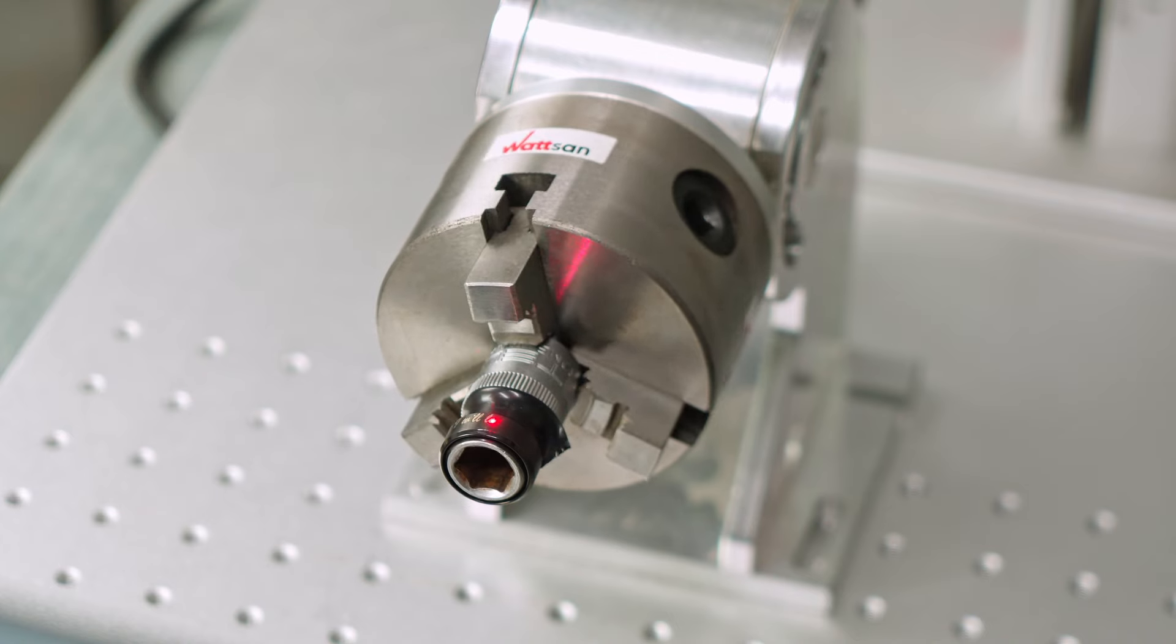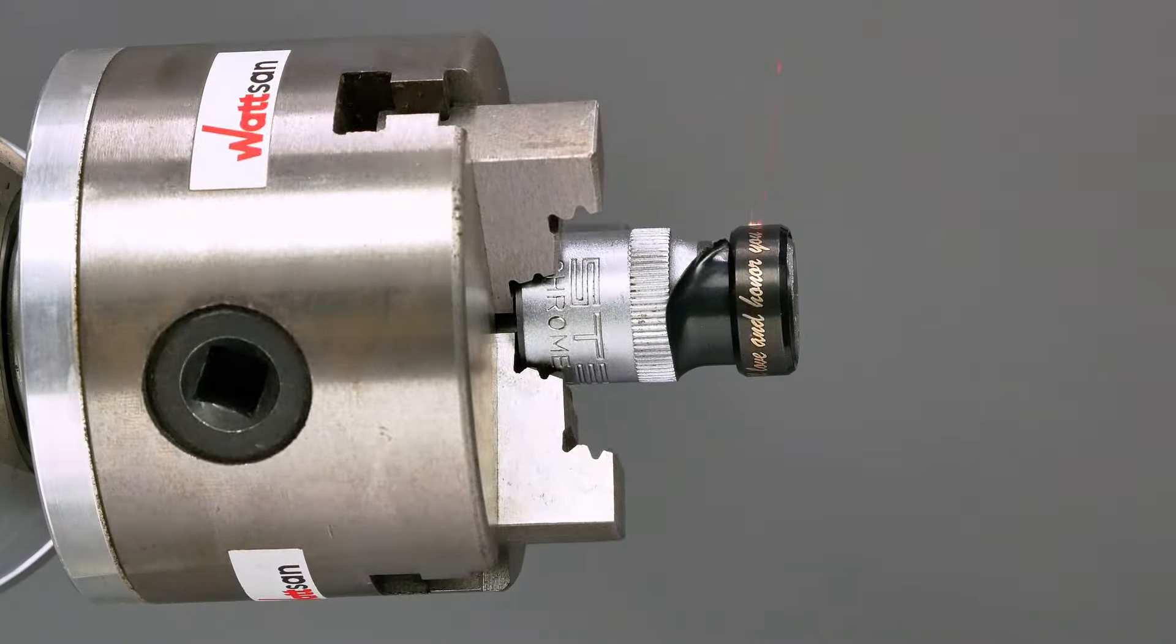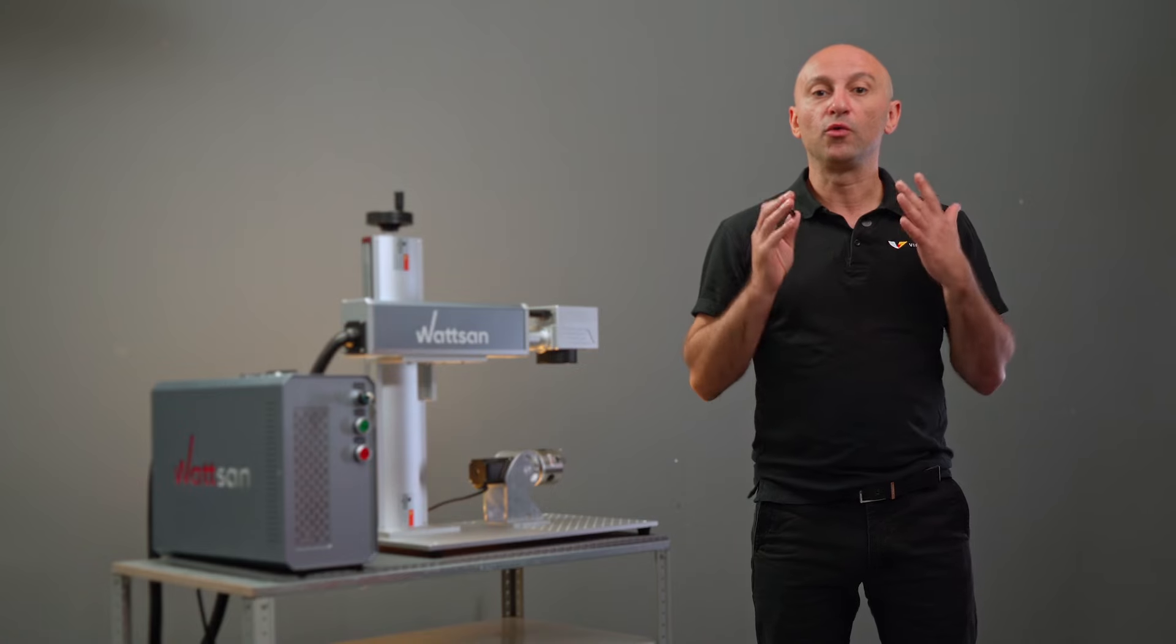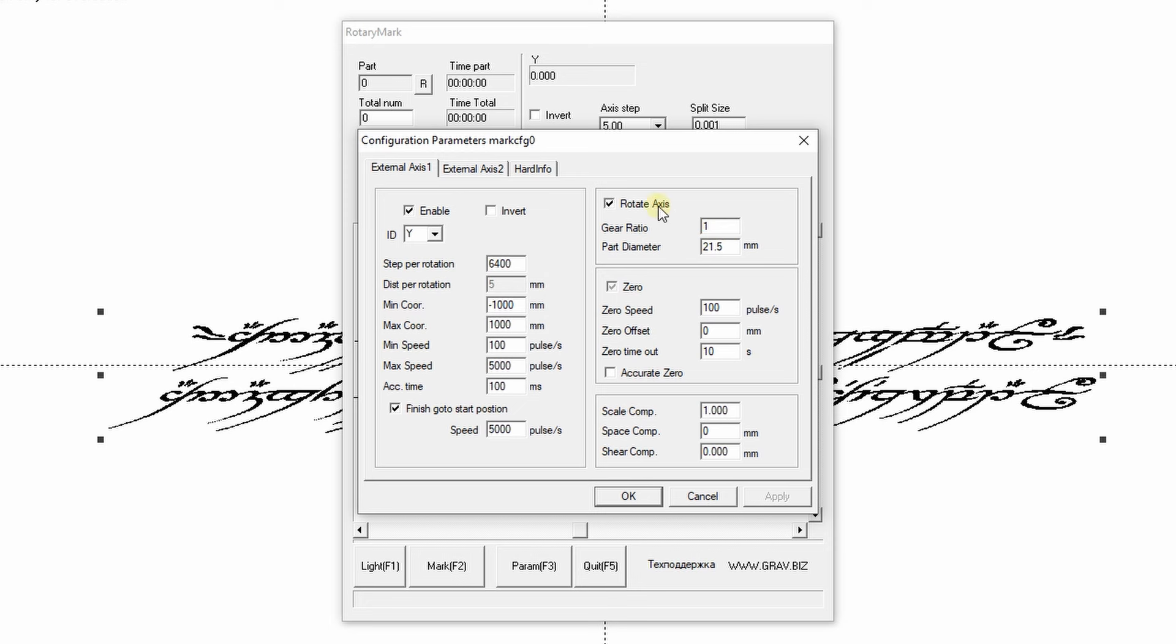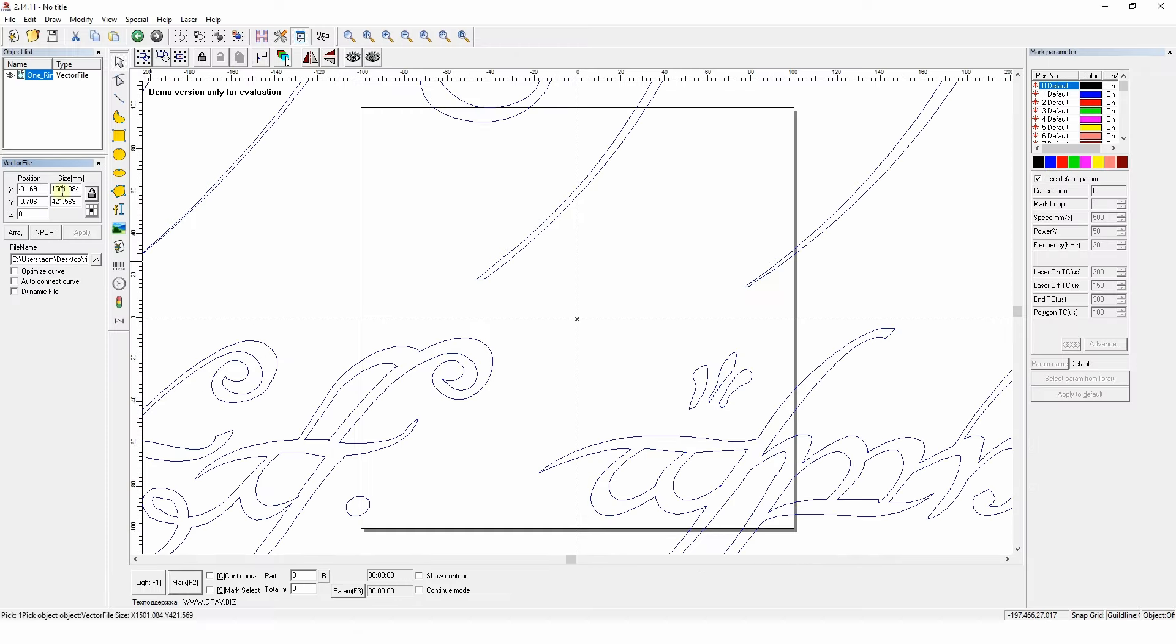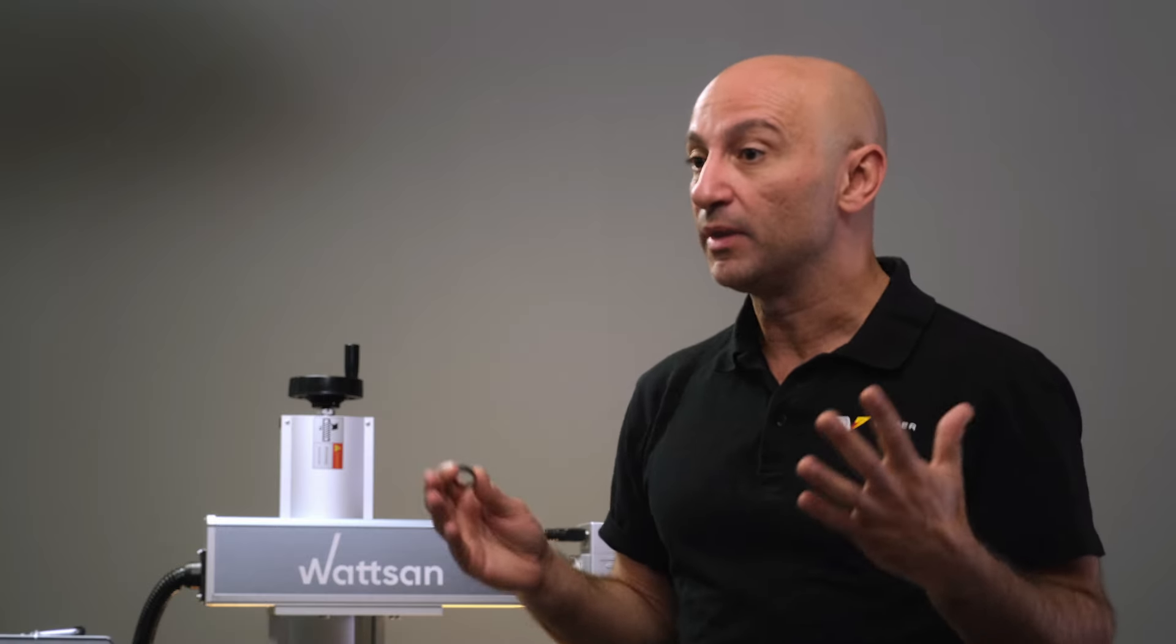How do you make a laser engraving on rings made of different materials? What equipment is suitable and what should be the parameters? How do you prepare the layout? This video will answer all these questions and more.